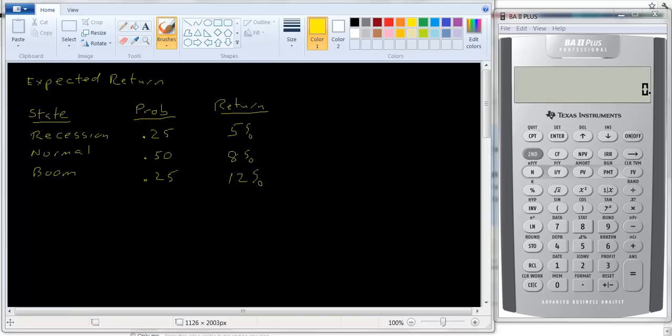I want to talk about the concept of expected return. Suppose we have 20 days of stock returns. We could figure out the average return by adding up those 20 stock returns and dividing by 20. That would be an arithmetic average. But sometimes we want to find an average but we don't have a bunch of data. We're looking into the future.